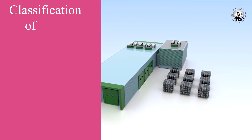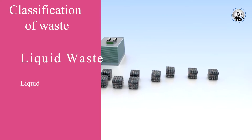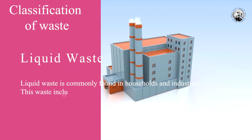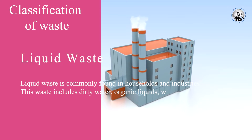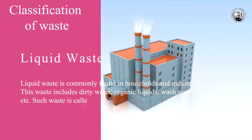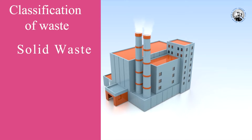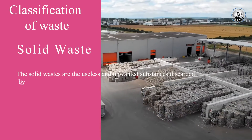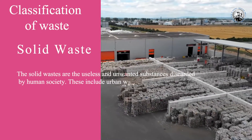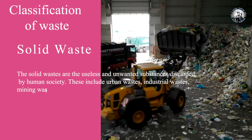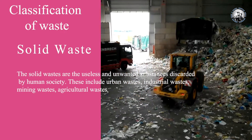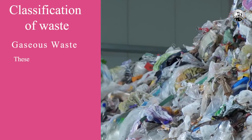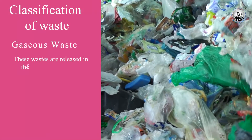Classification of Waste. Liquid waste is commonly found in households and industries. These wastes include dirty water, organic liquid, wash water, etc. Such waste is called sewage. Solid waste consists of useless and unwanted substances discarded by human society, including urban waste, industrial waste, mining waste, agricultural waste, biomedical waste, and radioactive waste.